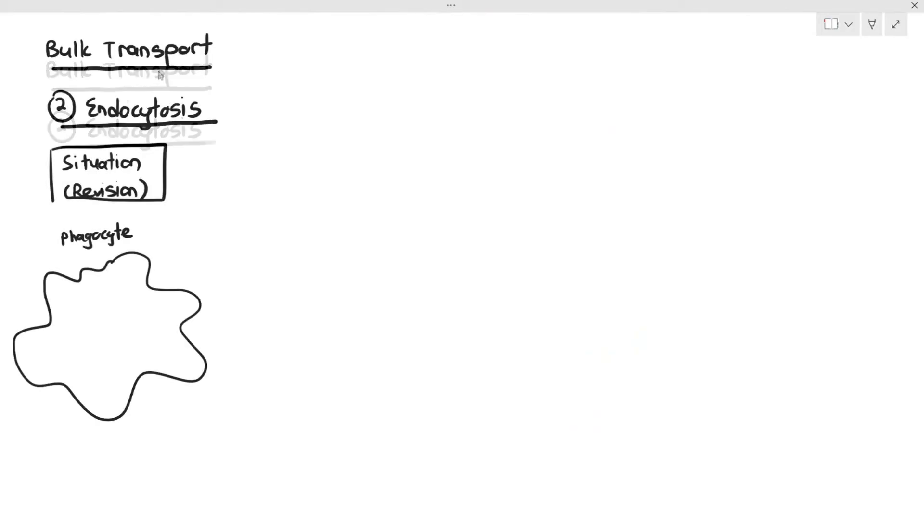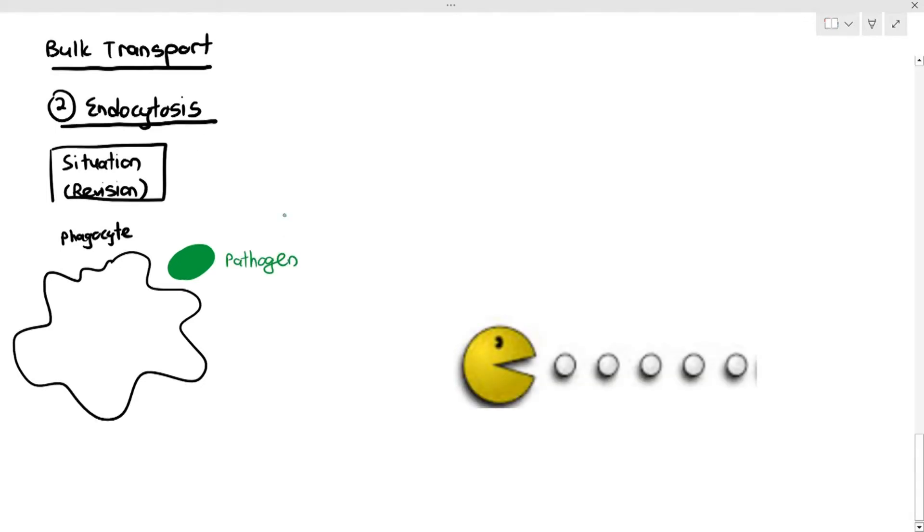Now, endocytosis, however, let's do another revision. In O-levels, you might have studied another white blood cell known as a phagocyte. I always tell my students that phagocyte is like Pac-Man. All it does is just eat substances. It engulfs and eats them. But look at this phagocyte and look at the bacteria, the pathogen. The pathogen is too large, so how is the phagocyte able to eat it?